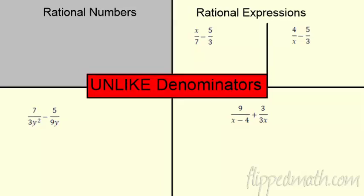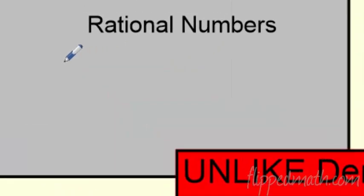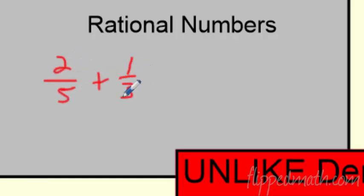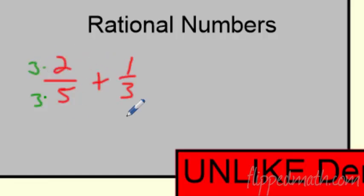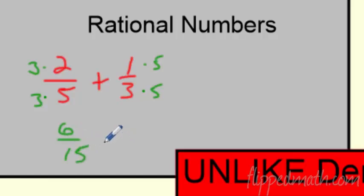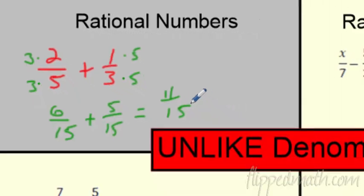Unfortunately fractions don't always have common denominators. Say we had two-fifths and now we're adding one-third instead. They're not equal parts, so I have to find a common denominator. Both can be 15. I times this by 3 — whatever you do to the bottom, you do to the top — giving six-fifteenths. Over here I times by 5 to make it 15 — again, whatever you do to the bottom, do to the top — giving five-fifteenths. Now they're both fifteenths, so I can add: eleven-fifteenths.